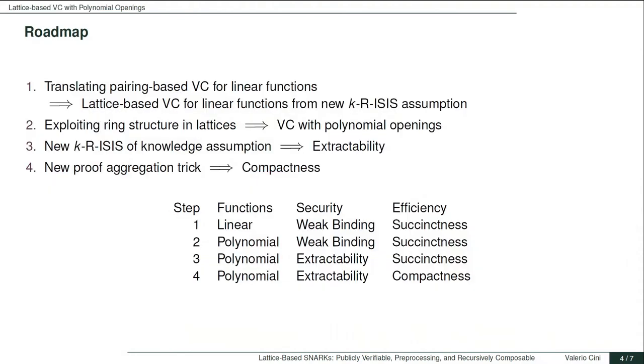The roadmap that we use to obtain a VC scheme with the required properties is the following. We start by translating a pairing-based VC scheme that supports opening to linear function to the lattice world. By doing so, we obtain a lattice-based VC which also supports opening to linear function, that is weak binding and succinct. While translating the construction, we also have to map the underlying assumption under which the scheme is proved secure. In doing so, we obtain a new class of lattice-based assumptions that we call k-ring-inhomogeneous short integer solution, or k-R-ISIS for short.